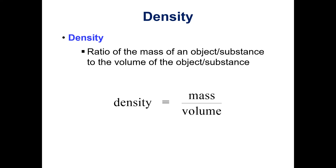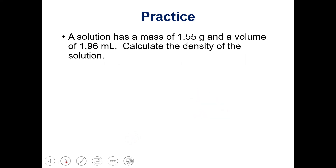In this video we're going to look at density and how to do unit conversions. Density is a ratio between the mass of an object and the volume of an object. We can measure mass using a balance in the lab and volume with something like a graduated cylinder, and we can take the mass of a substance and divide it by its volume.